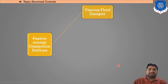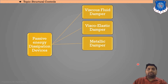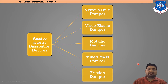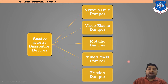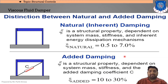The types of PED devices are: first, viscous fluid damper; second, viscoelastic damper; third, metallic damper; fourth, tuned mass damper (TMD); and fifth, friction damper. These are the five categories under passive energy dissipation devices. Compared to base isolation, which is cheaper, these are used for various skyscraper buildings. TMDs are the most innovative technology currently used in the construction industry.